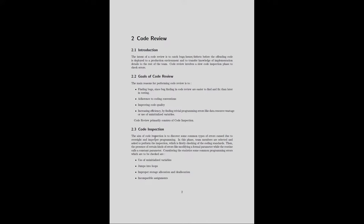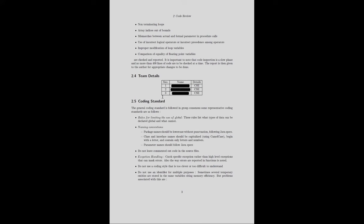The aim of code inspection is to discover common types of errors caused due to oversight and improper programming. Team members are selected and asked to check coding standards and the presence of certain kinds of errors. Common programming errors to be checked include: use of uninitialized variables, jumps into loops, improper storage allocation and deallocation, incompatible assignments, non-terminating loops, array indices out of bound, mismatches between actual and formal parameters in procedure calls, use of incorrect logical operators or incorrect operator precedence, improper modification of loop variables, and comparison of equality of floating point variables.